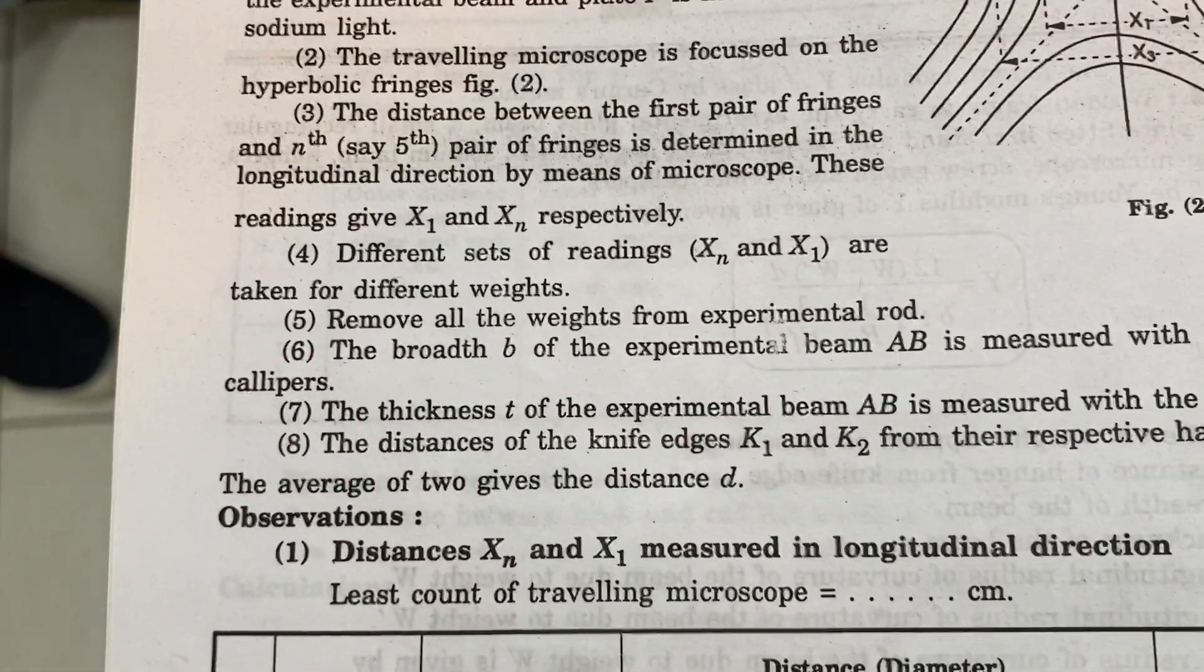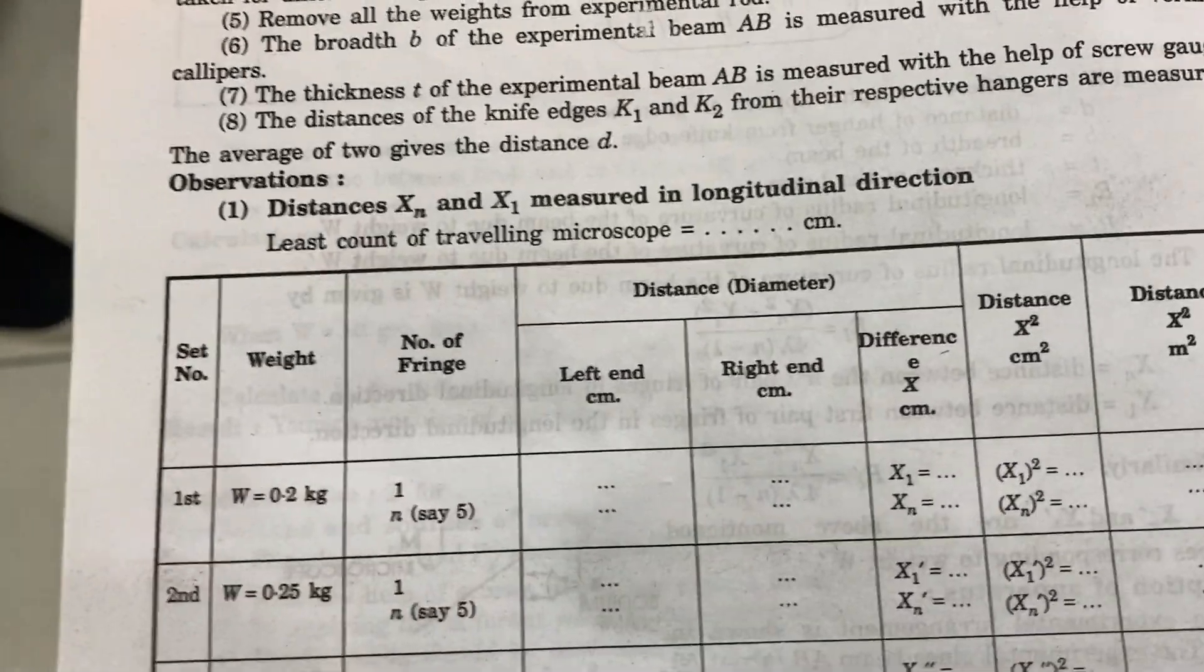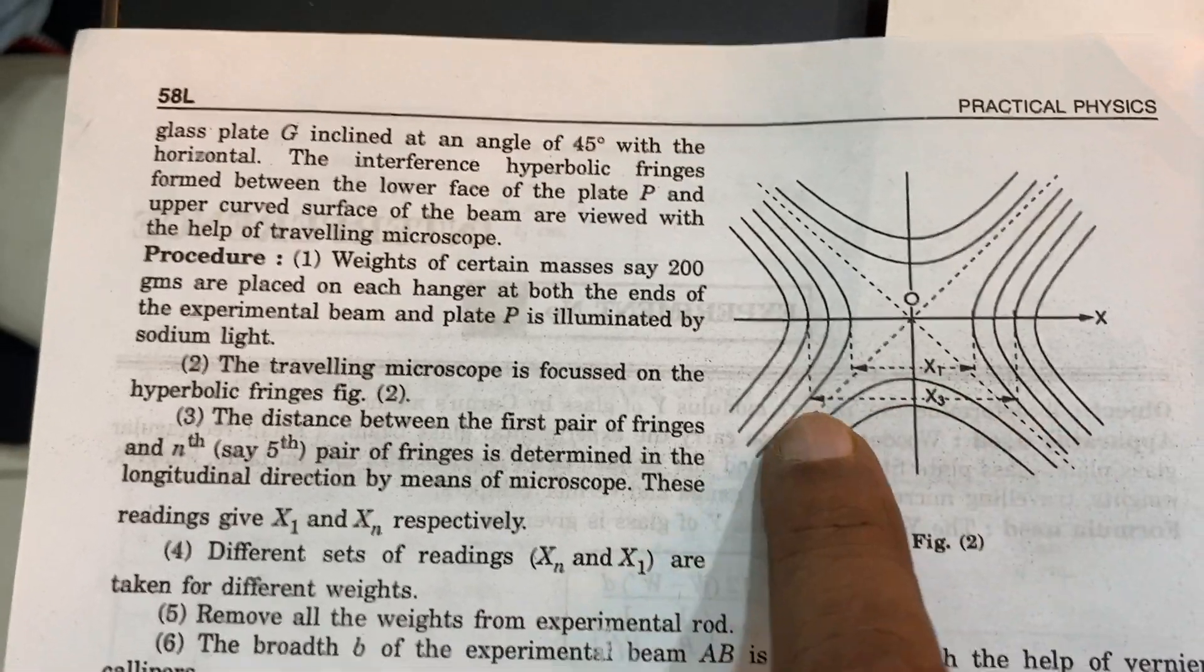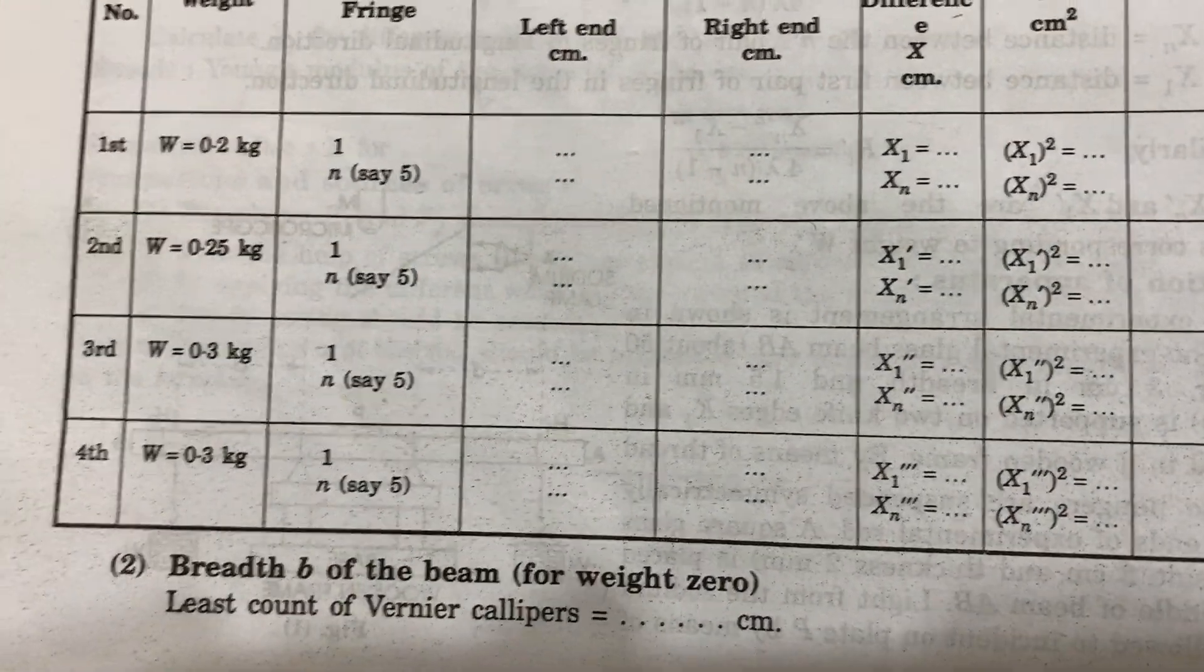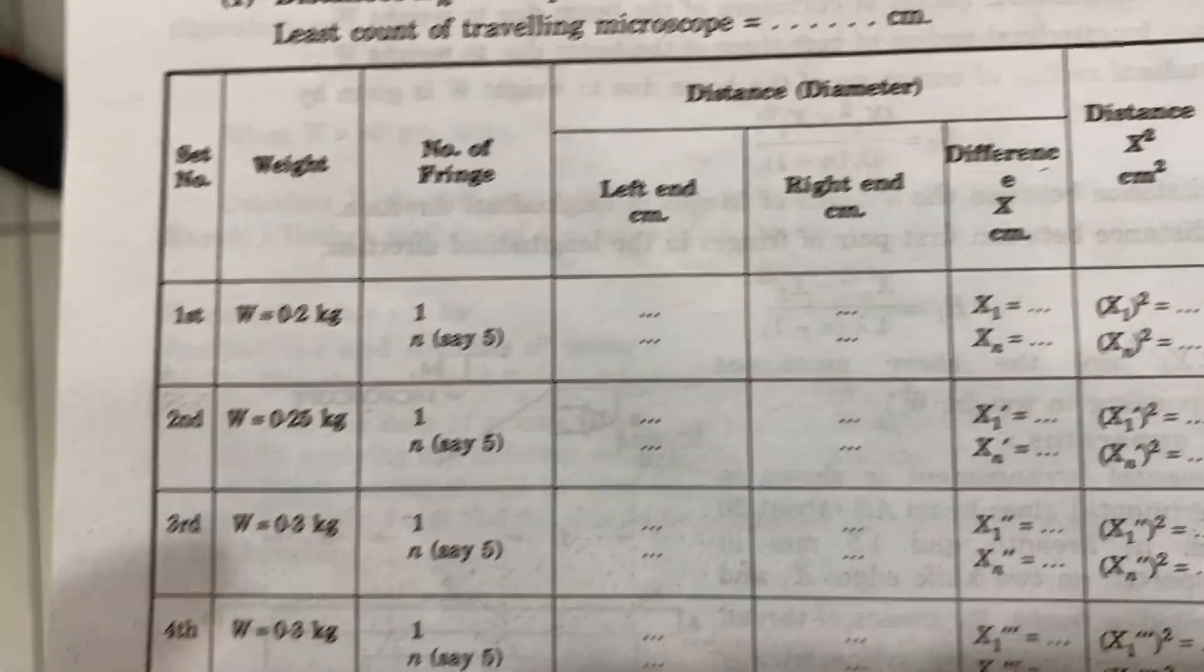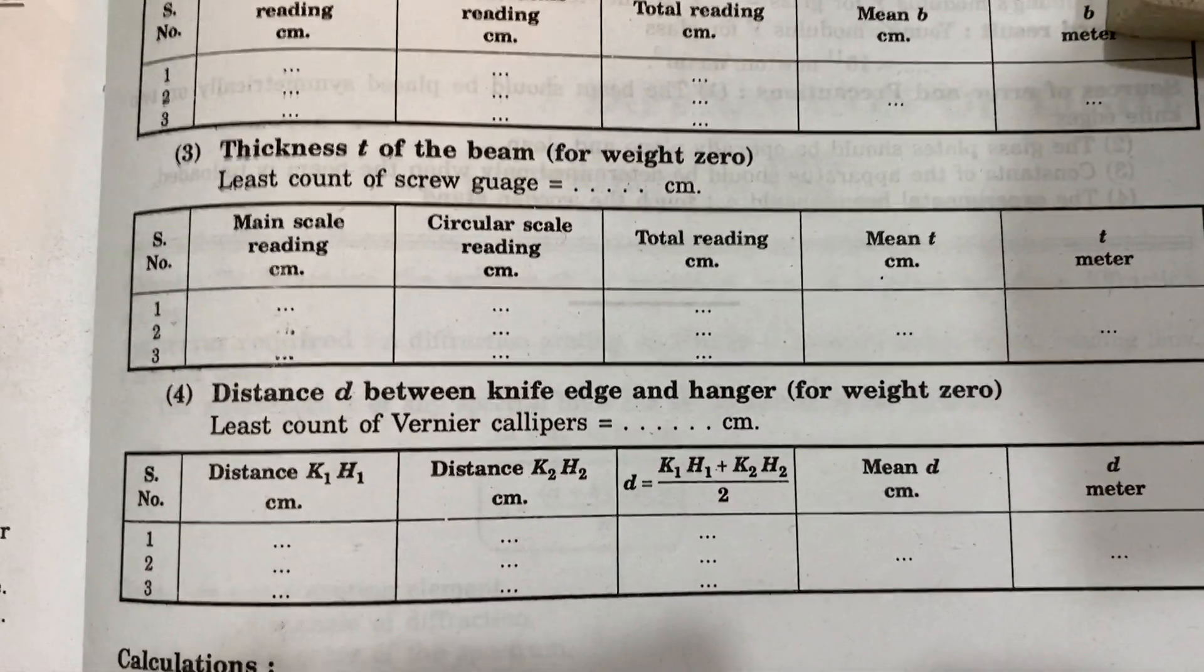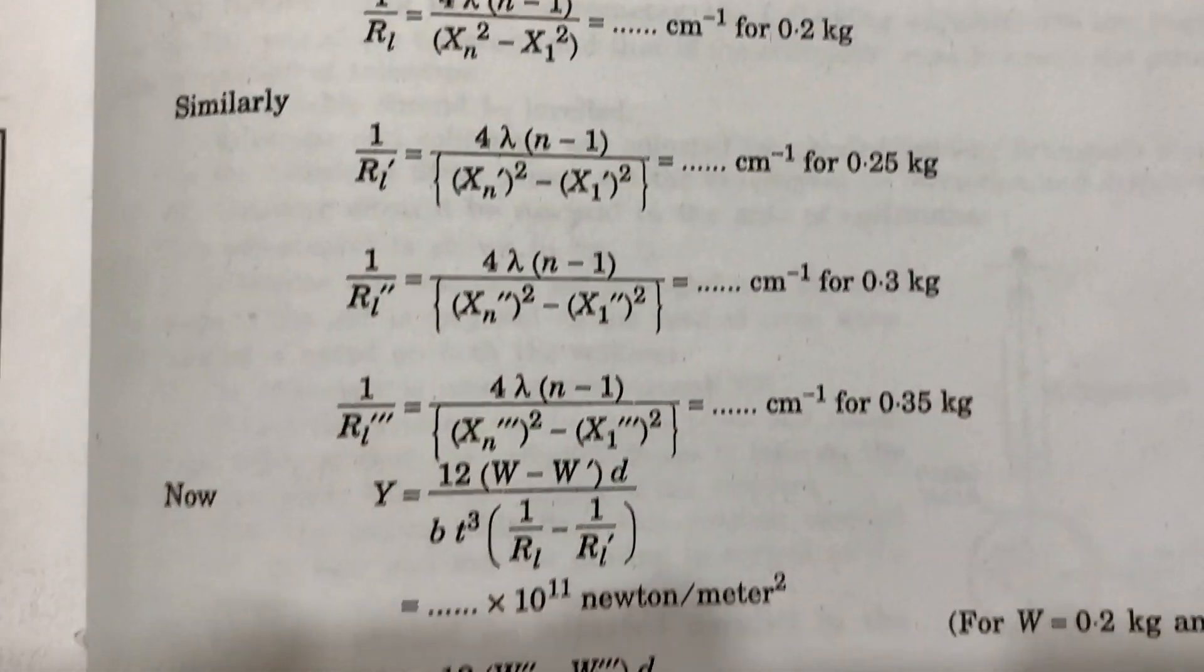Either you can use a traveling microscope which has X and Y motion, but in this you can use two calculations. Charts are there, and you can see very easily how much weight we are employing in kilograms. But we have found actual working is much better in grams. Then thickness of the beams and other things you can weigh and calculate as per your books.